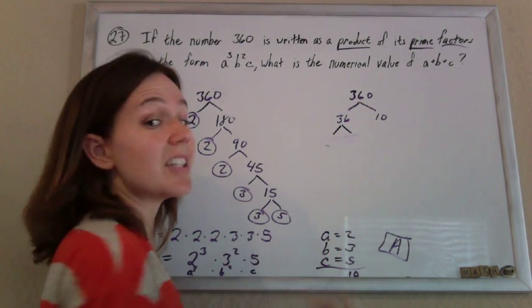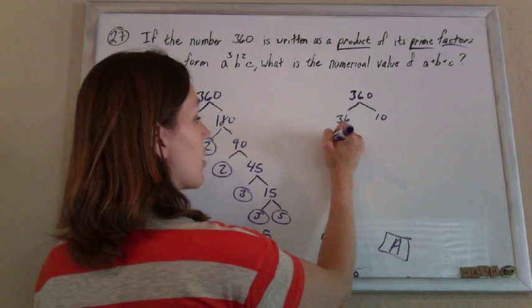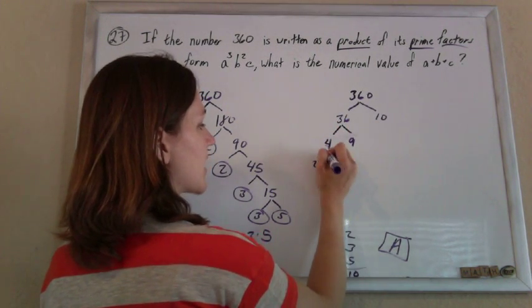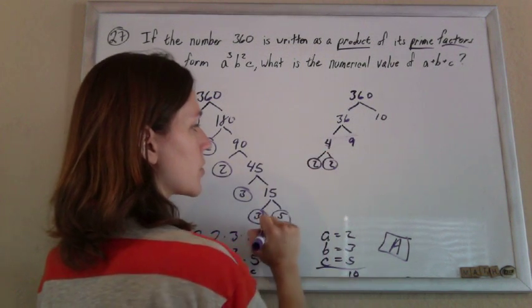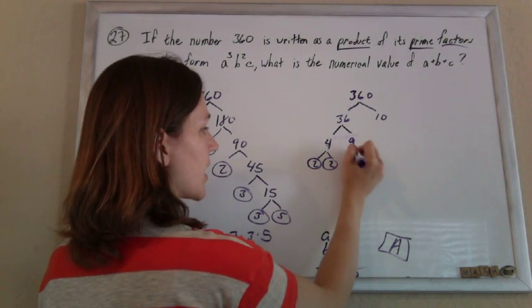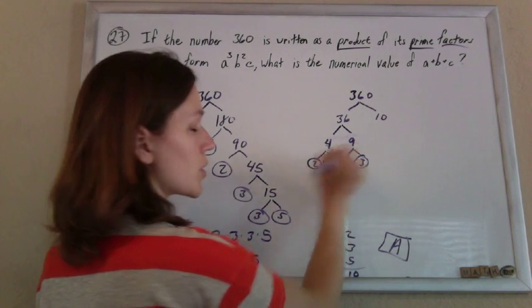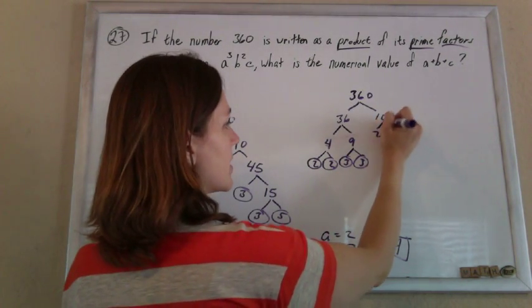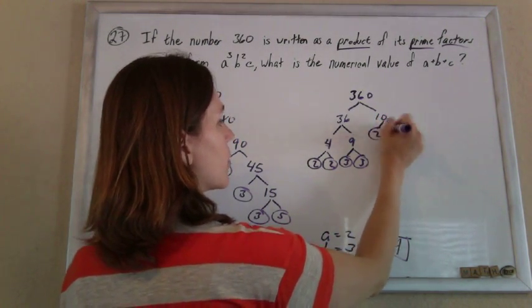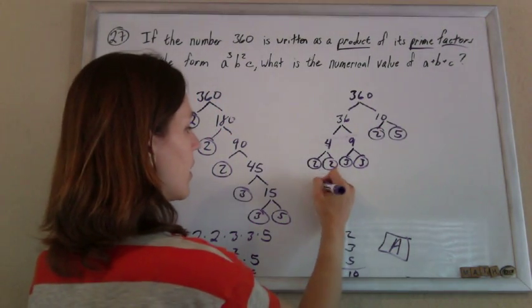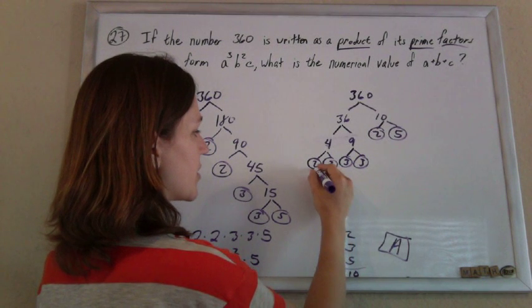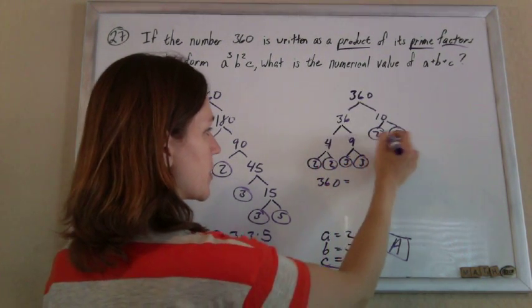Maybe you don't see the 2 and 18 for the 36. Maybe you see a 4 and a 9. 4 breaks down to a 2 and a 2, and those are primes, so circle them. The 9 breaks down to a 3 and a 3. Those are primes, so circle them. The 10 is a 2 and a 5. Those are primes, so circle them. And so you can see that you're going to get the same thing.